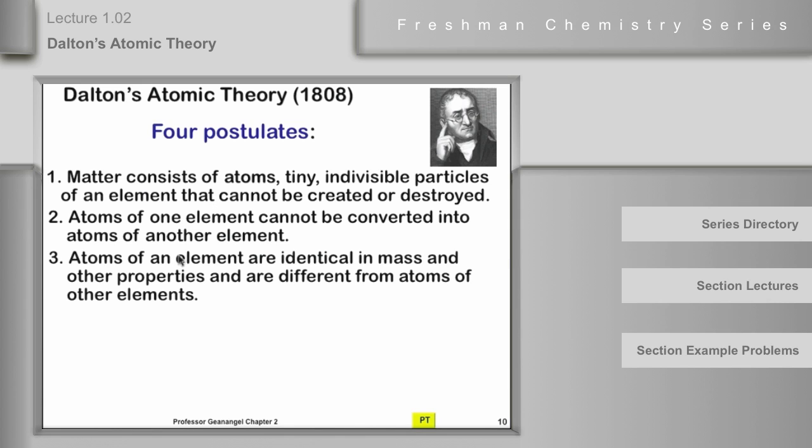The third one that he postulated here was the atoms of a particular element are all identical in mass and other properties, and all of these are different from atoms of other elements. He didn't quite get this one right. And we'll talk about why he didn't a little bit later. There are actually some potential differences between the atoms of an individual element that he didn't know about.